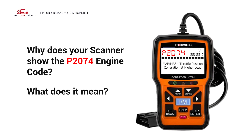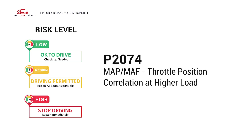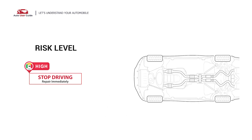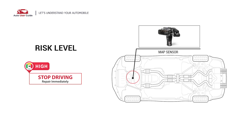Why does your scanner show the P2074 engine code? What does it mean? P2074 is a diagnostic trouble code for MAP or MAF throttle position correlation at higher load. It indicates the PCM detects a discrepancy between the readings from the manifold absolute pressure or mass airflow sensor and the throttle position at higher engine loads.